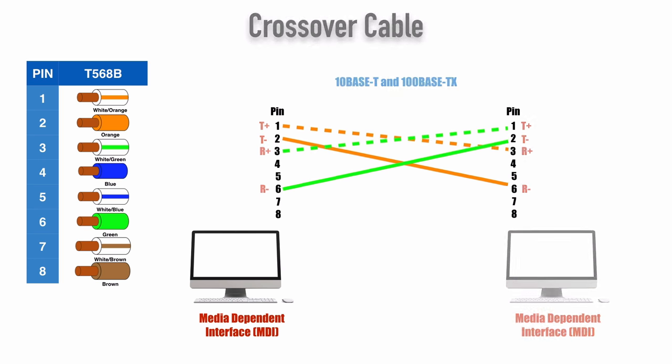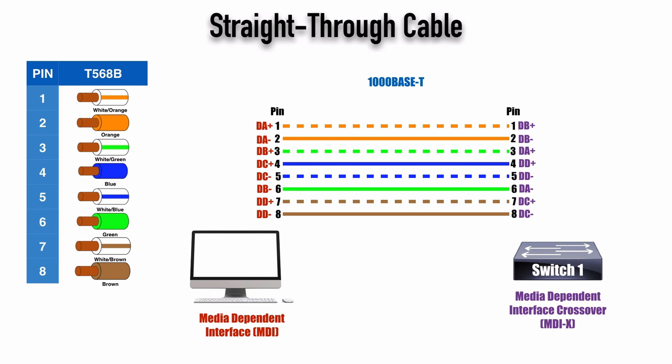Now let's bump the speed up to gigabit — 1000BaseT. Here we're using all eight pins, all four pairs. Instead of just one transmit pair and one receive pair, we've got data A, data B, data C, and data D, each with polarities: DA+, DA-, and so on. With a straight-through cable going from an MDI device like a PC to an MDIX device like a switch, the DAs map to the DBs — DA+ goes to DB+, DA- goes to DB- — and C's and D's map to one another as well.